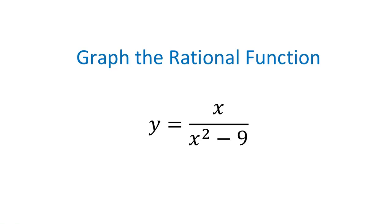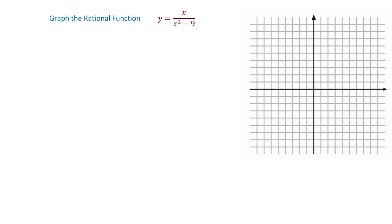Hello, welcome to the Math District. In this video we will graph the rational function y equals x over x squared minus 9. To graph this function we have to find any x-intercepts, the y-intercept if there is one, any vertical asymptotes, and the horizontal asymptote if there is one. Then we will find some additional points and using all this information we will graph this rational function y equals x over x squared minus 9.